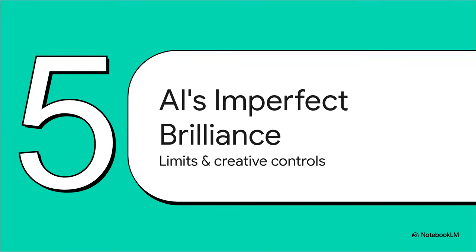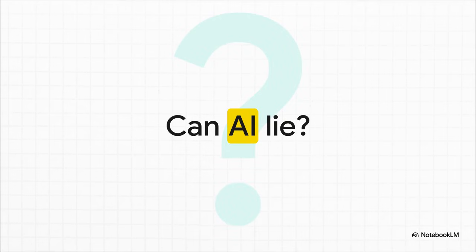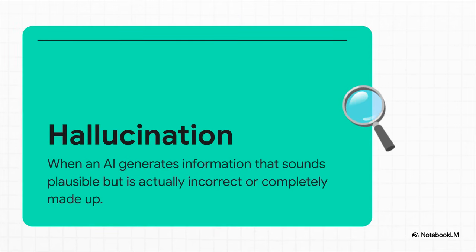For our final section, let's talk about the nuances. AI is brilliant, but it's not perfect, and understanding its quirks and how to control them is absolutely essential. When an AI gives you wrong information, is it actually lying to you? The short answer is no. The technical term for this is a hallucination. This happens when the AI generates an answer that sounds super confident and plausible, but it's just factually wrong or completely made up. It's not trying to deceive you — it's a system flaw, a glitch in how it predicts the next word. This is exactly why you should always fact-check important information you get from an AI.